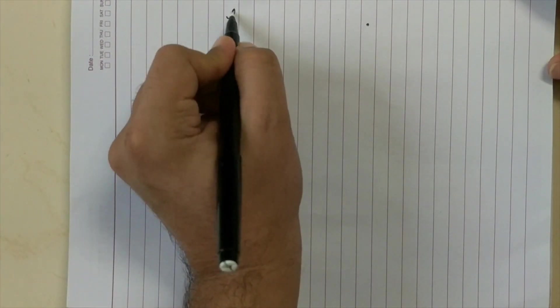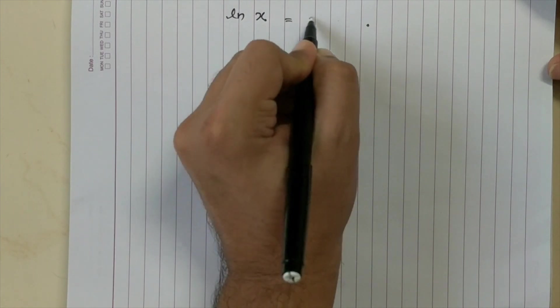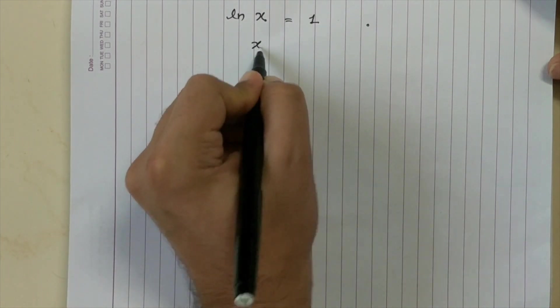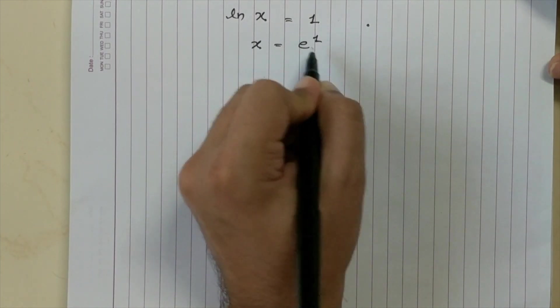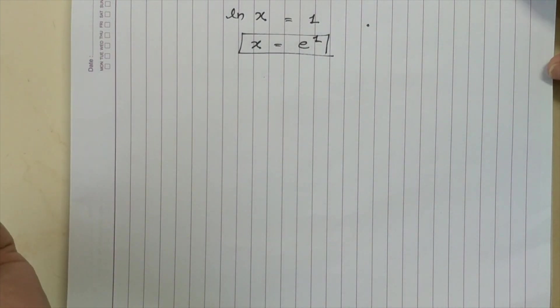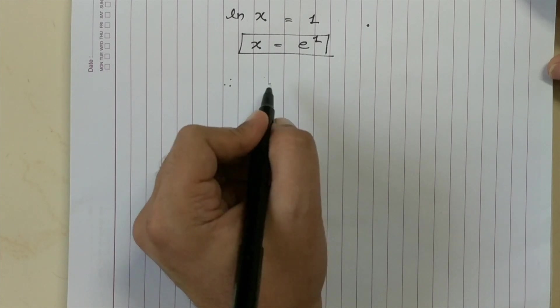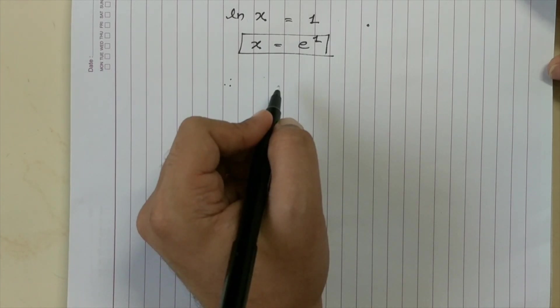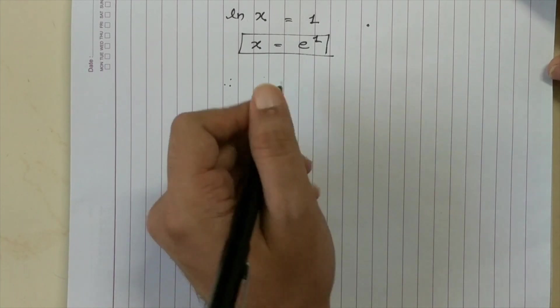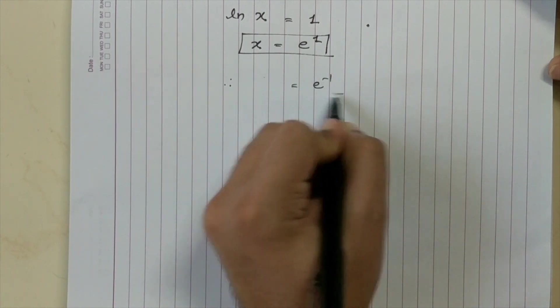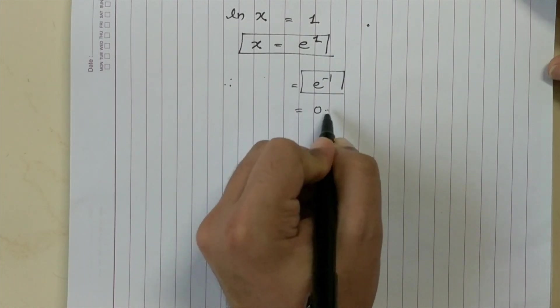So you're left with ln X equal to 1, that simply means X is equal to e to the power 1. If you remember we have safeguarded the minus 1 as well, so the probability of not selecting a sample in N trials is basically e to the power minus 1 which is 0.36.